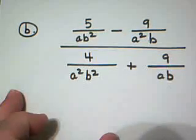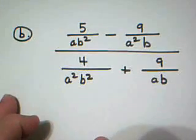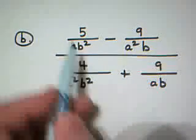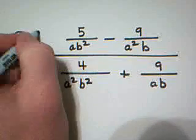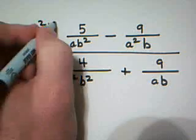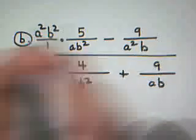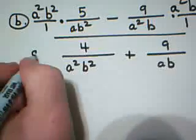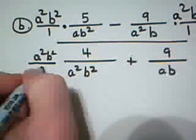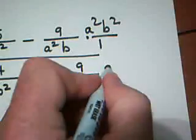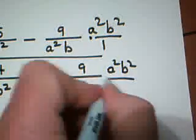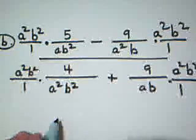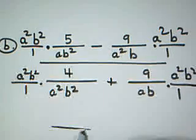So I'm going to multiply every single one of these, that would be four times, by A squared B squared. Sometimes putting it over 1 makes it look a little better for things to cancel. And now look what happens.